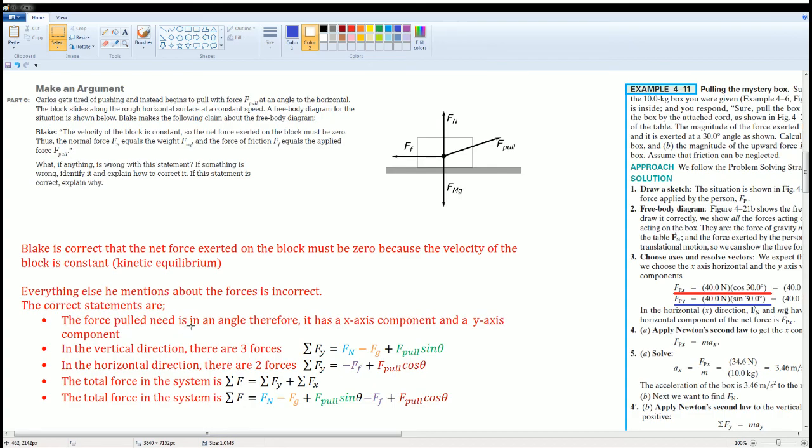And I listed all the statements that should be correct that he got wrong. I stated first: the force pulled knee has an angle in it, therefore it should have an x component and a y component. Two: the vertical direction have three forces, the force normal which is up, the force gravity going down, that's why there's a minus, plus the F pull sine theta part, because this is in the vertical direction. On the horizontal direction, there are just two forces: the force of friction that goes opposite and the force pull, but it is the cosine part.